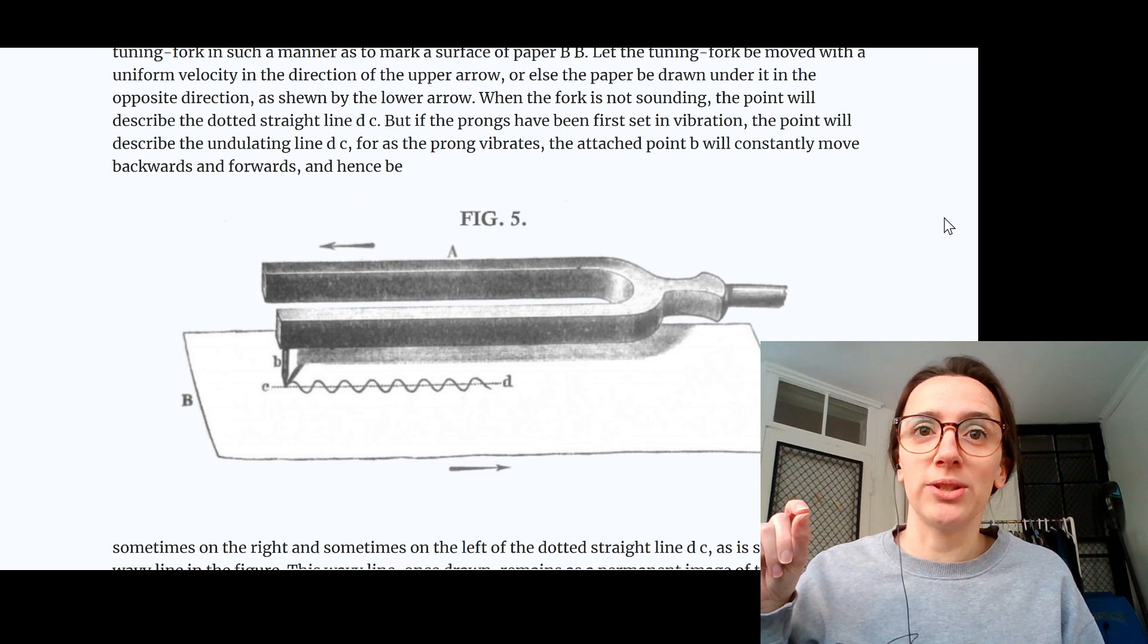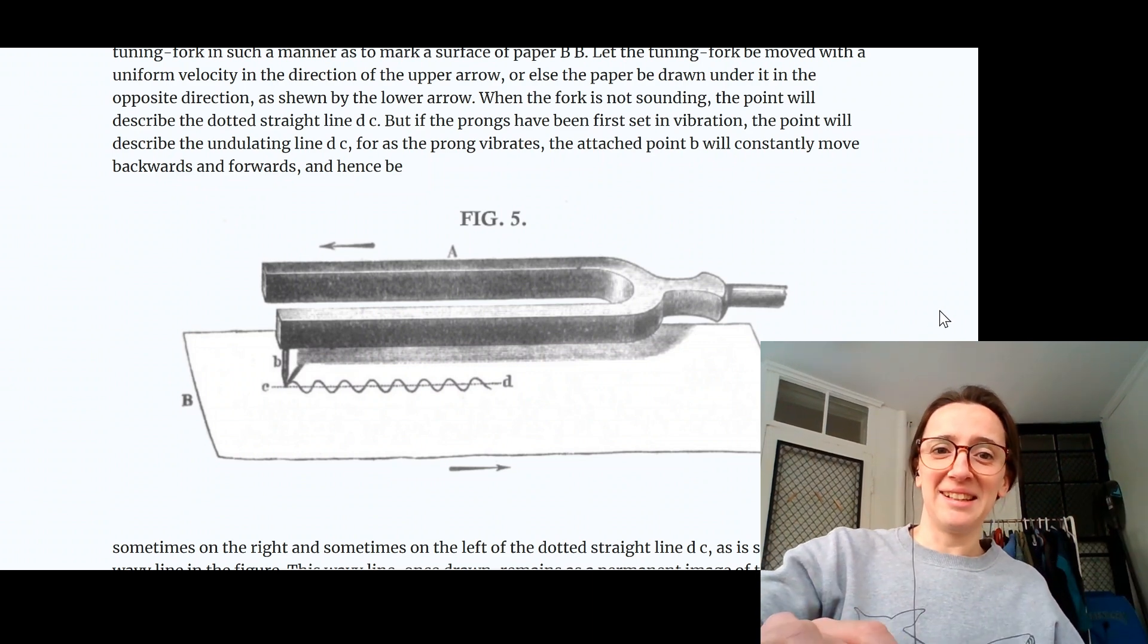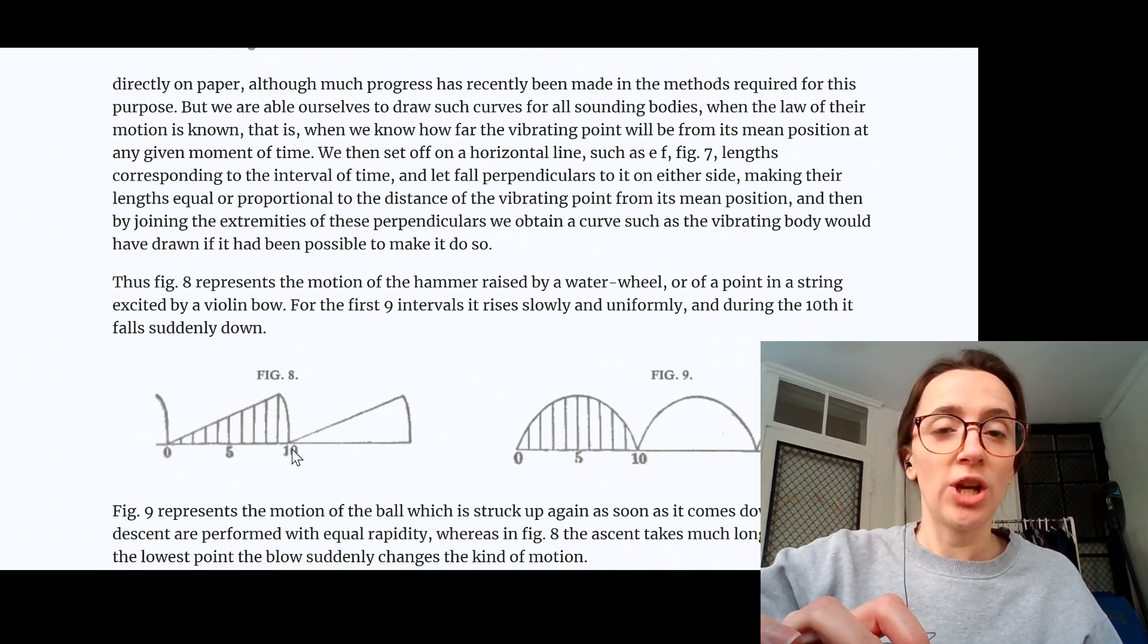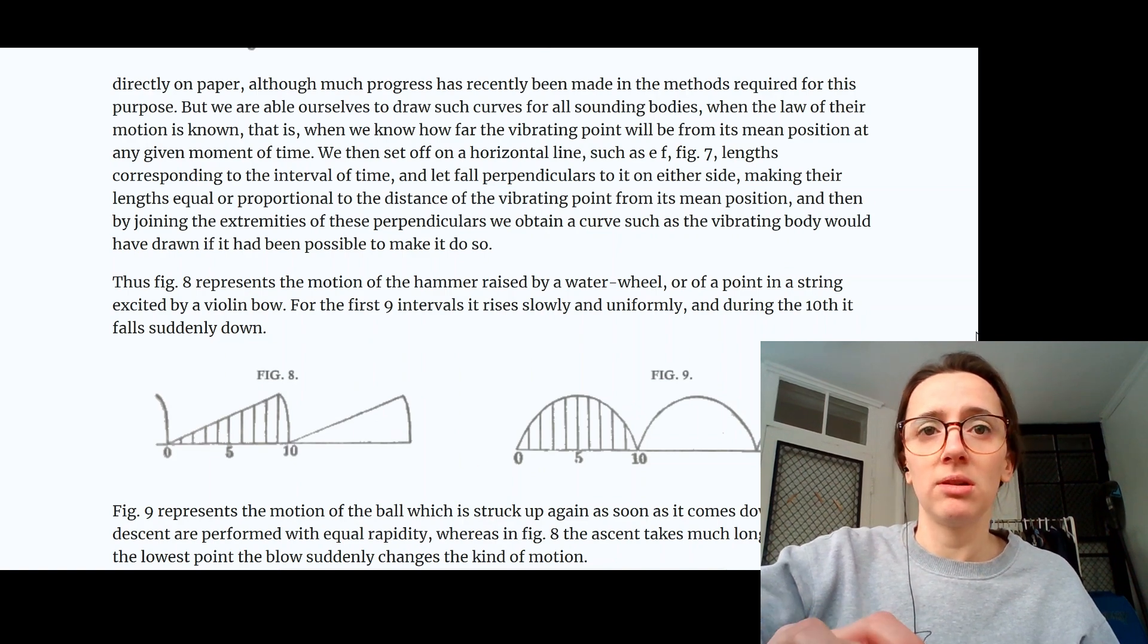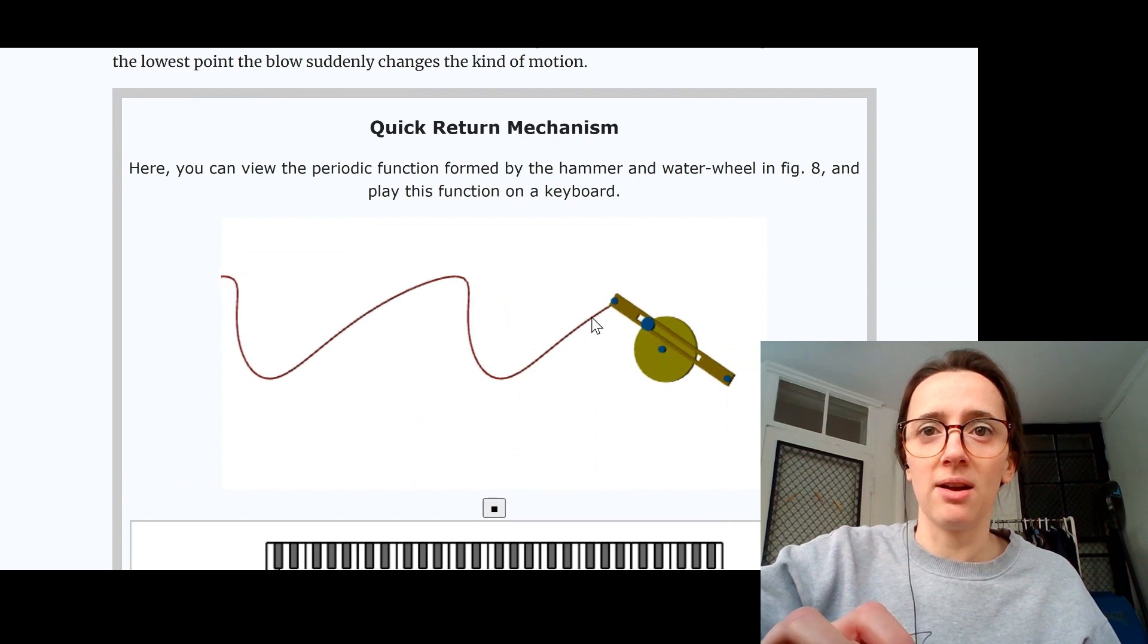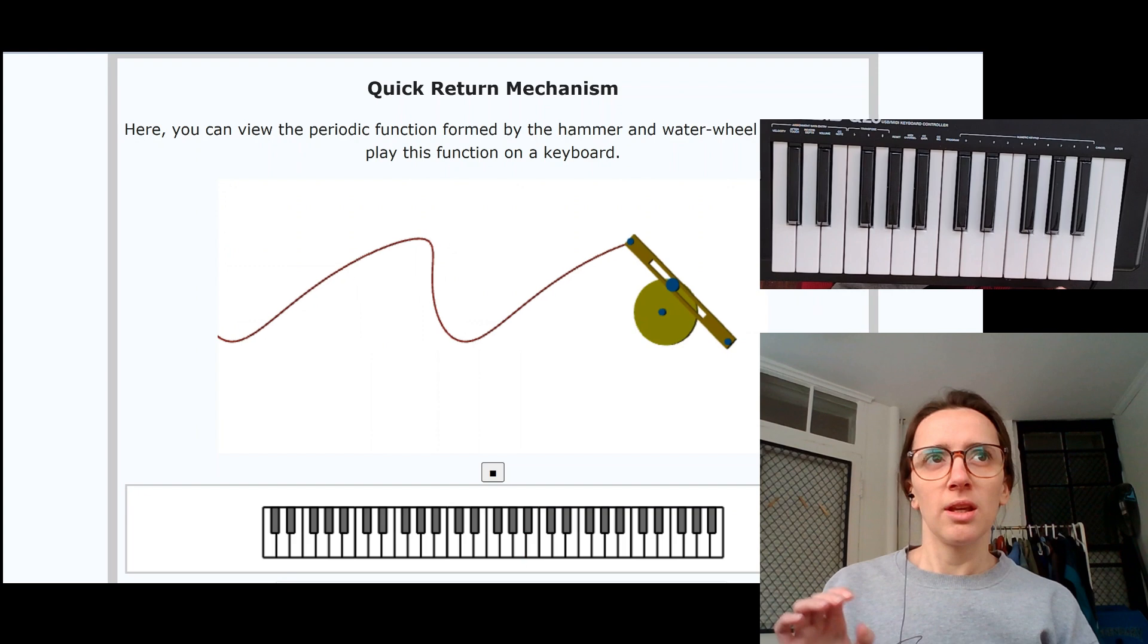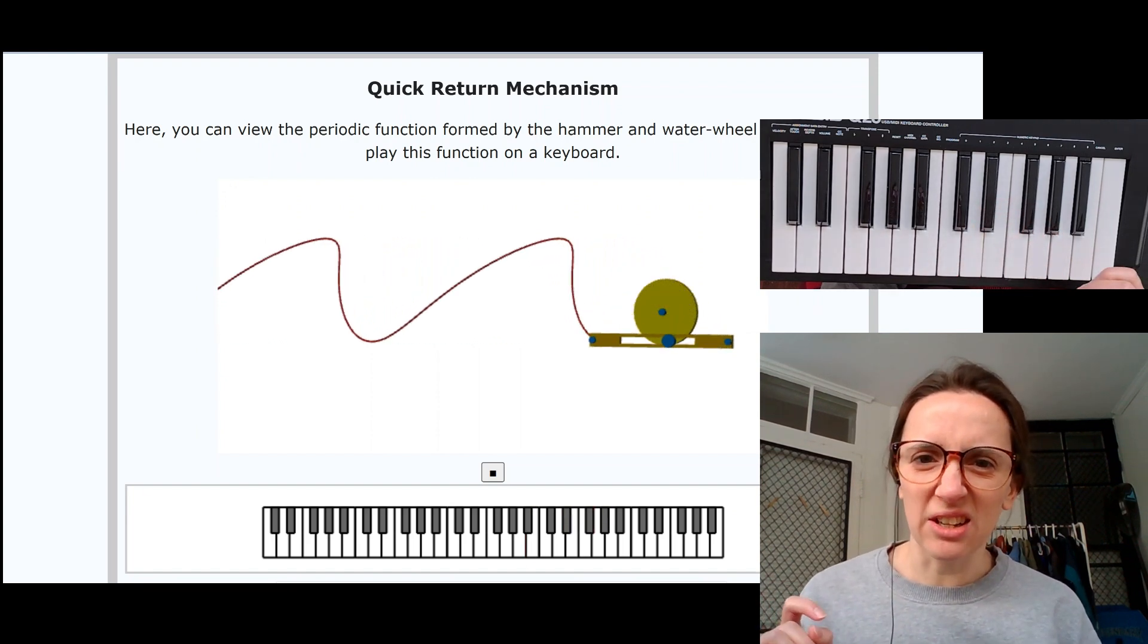Now I have a handy dandy piece of software that can show me the waveforms of different sounds, but this is how Helmholtz did it. He has a tuning fork with just like a pencil attached to the end of it and then he just tugs the paper underneath it. Here's a little animation of what that would look like, although probably a lot faster than that. Then he gives us the figure drawings for two different shaped curves. The first one is imagining a hammer raised by a water wheel and the second a bouncing ball. Here's the motion of the water wheel. We can play the animation and see how that curve is drawn. There's the drop. And if I get my midi keyboard back out, we can see what this function sounds like.